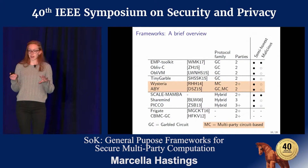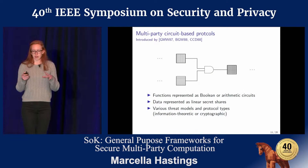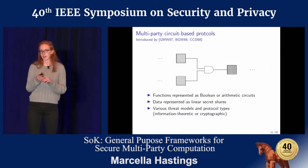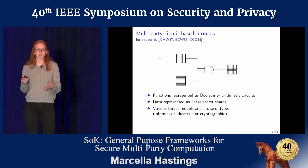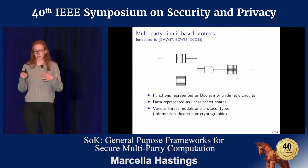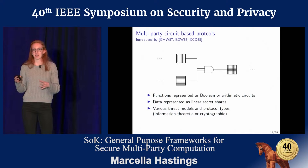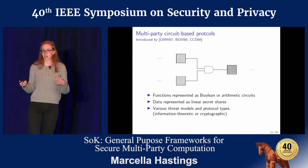The second type encompasses a wide variety of protocols, which we call multi-party circuit-based protocols. These protocols have two things in common: first, they represent functions using a circuit, either arithmetic or Boolean; and second, data is represented as linear secret shares. The linear secret sharing means these protocols can typically support an arbitrary number of parties, where the parties work together going gate by gate through the circuit to convert secret shares of the inputs to secret shares of the outputs. The way they do this conversion can be executed in different ways — either information-theoretically or cryptographically secure models.